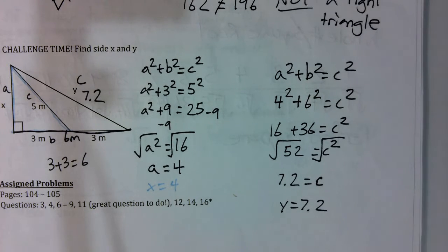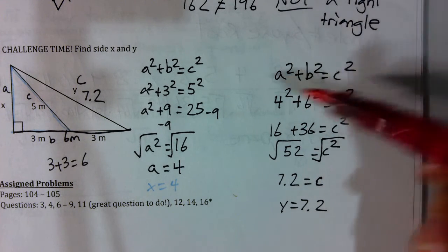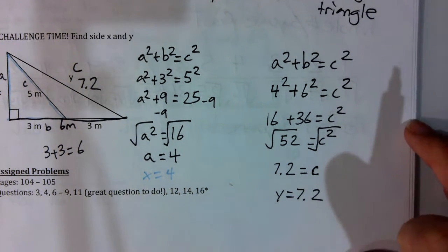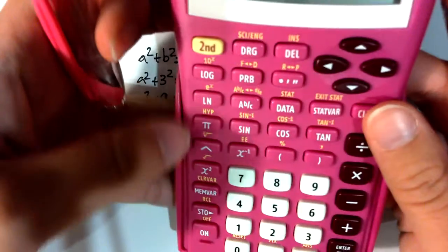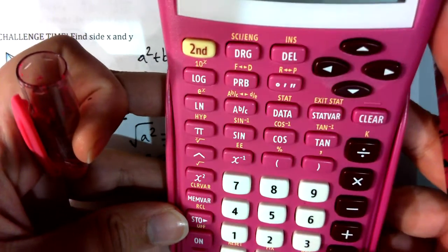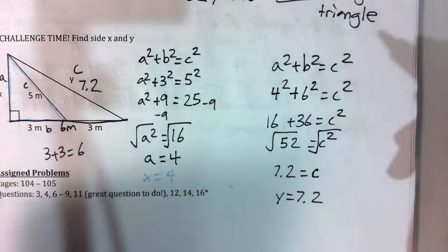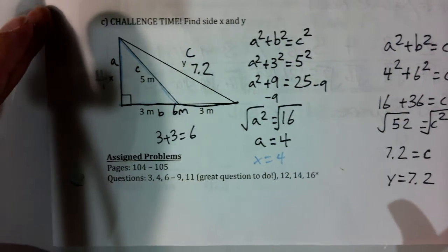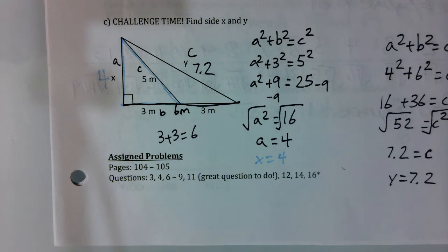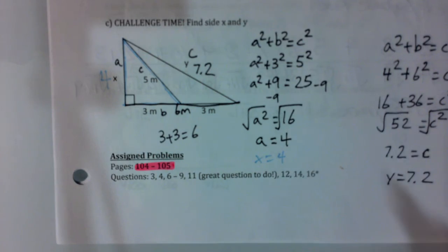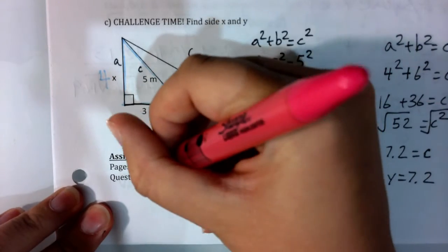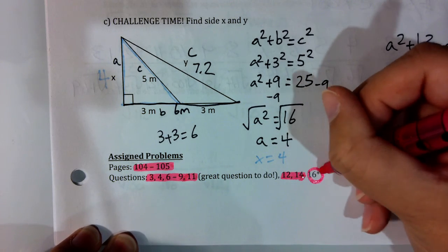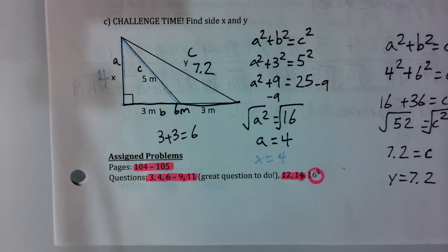4² + 6² = 16 + 36 = 52. Find the square root — round to the nearest tenth. Using a calculator: √52 ≈ 7.21, which rounds to 7.2. You have all the tools to complete the questions in your textbook — they are due tomorrow. Your unit test on all of Chapter 3 is on Friday. Pages 104 to 105, assigned problems are at the bottom of page 12: questions 3, 4, 6 to 9, 11, 12, 14, and 16. Try your best — good luck!